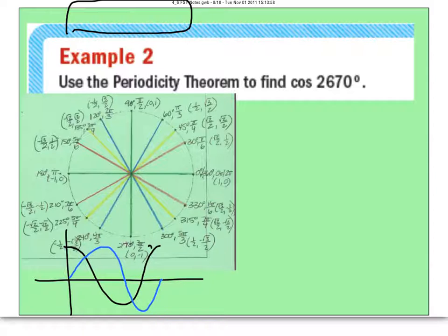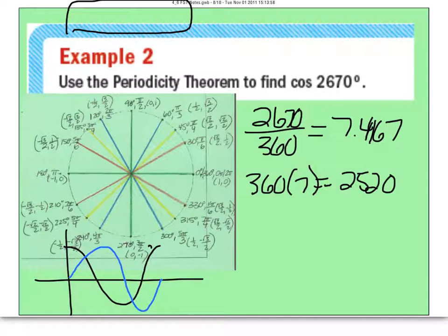So, what that is, is I'm going to take out 7 circles. So, let's do 360 times 7. That's actually going to give me 2,520. So, let's take that and subtract it from 2,670. And that's going to leave me left over with 150 degrees. So, really, this question is the same as asking me, what is the cosine of 150 degrees?